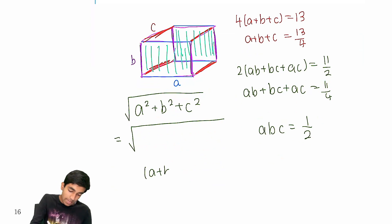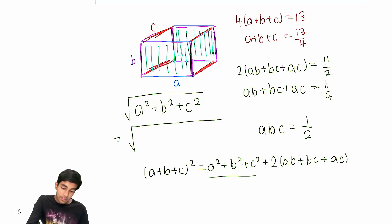To do this, we take (a + b + c) and square it. This is a common factorization you should know: (a + b + c)² = a² + b² + c² + 2(ab + bc + ac). So to find a² + b² + c², we just take (a + b + c)² and subtract